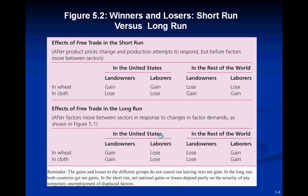Here we see a summary table similar to a comparative advantage table from Ricardian theory. In the short run for the US: in wheat, landlords gain and laborers gain; in cloth, both lose. For the rest of the world in the short run: in wheat, landlords lose and laborers lose; in cloth, both gain. In the long run for the US: landlords gain in both wheat and cloth, while laborers lose in both sectors. In the rest of the world in the long run: landlords lose in both wheat and cloth, and laborers gain in both sectors.